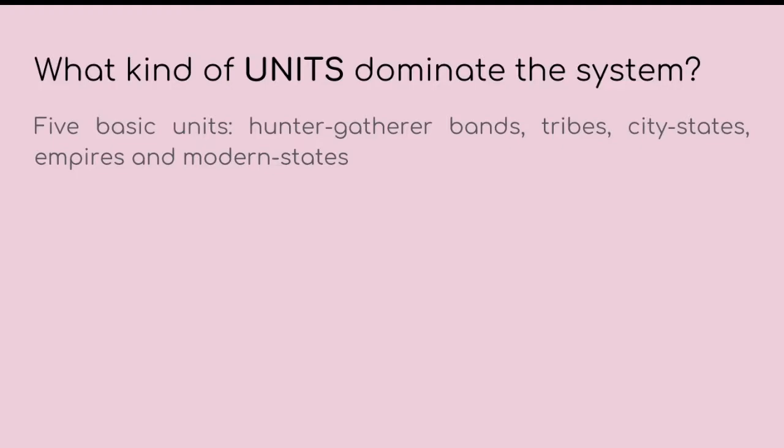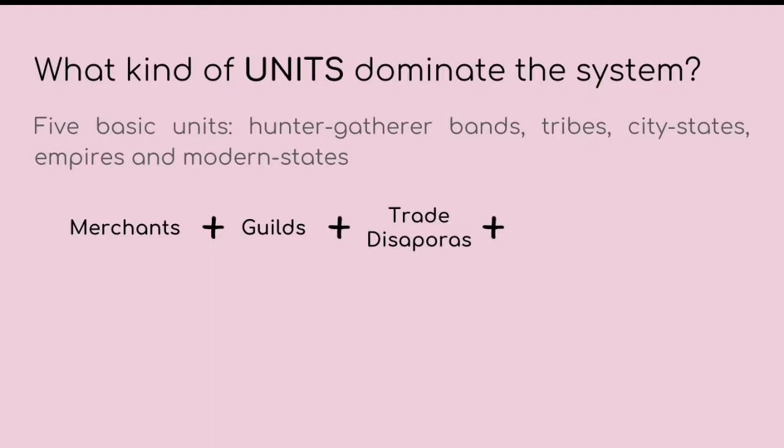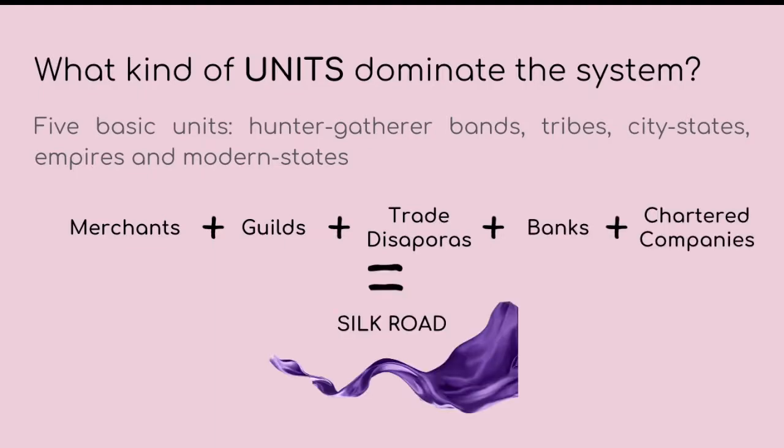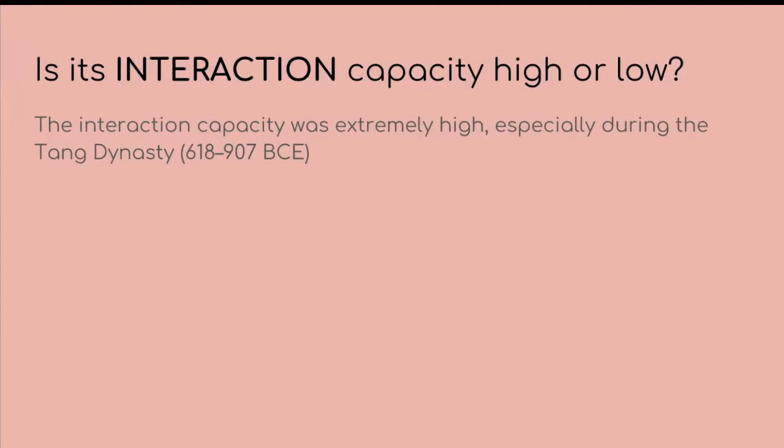What kinds of units dominate the system? There are five basic units: hunter-gatherer bands, tribes, city-states, empires, and modern states — taking into account that the Silk Road lasted for 17 centuries. Moreover, we can also include specialized units such as merchants, guilds, and trade diasporas through banks and some chartered companies.